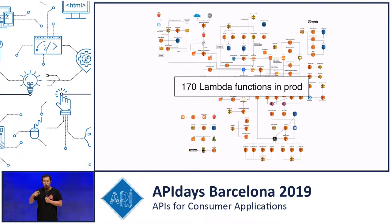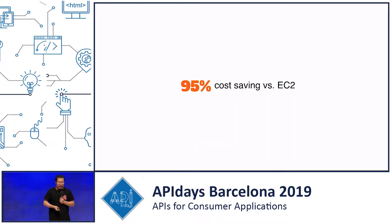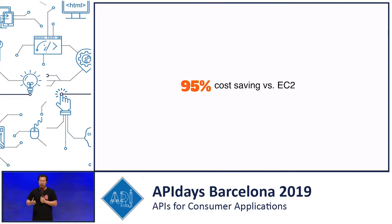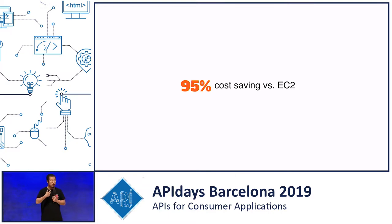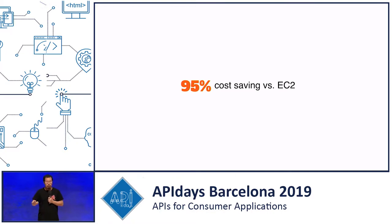By the time we finished a lot of this re-architecture, we had about 200 Lambda functions running in production. And even though cost wasn't our primary driver, we did find a very healthy dose of cost saving. The EC2 servers we were running — most of it was just going to waste. With Lambda, you only pay when your code actually runs, so it's far more efficient when you only pay for your code when it's actually doing something.